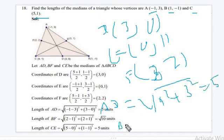Similarly, if you have to find the value of median BF, the BF will be equals to √[(2-1)² + (2-(-1))²], that is 1 square plus 2 minus (-1) whole square, that is √10.